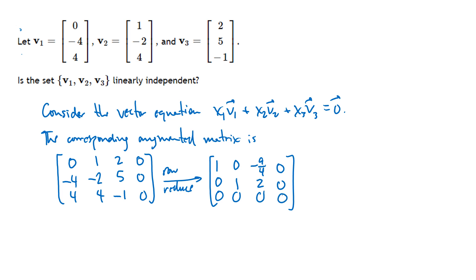Looking at the row-reduced matrix: certainly we have no pivot in the last column, but that only tells us the equation has some solutions — we already knew that, since plugging zero for all x's always works. The key observation is that we have no pivot in the third column, which means x3 is a free variable. So we do in fact have non-trivial solutions.